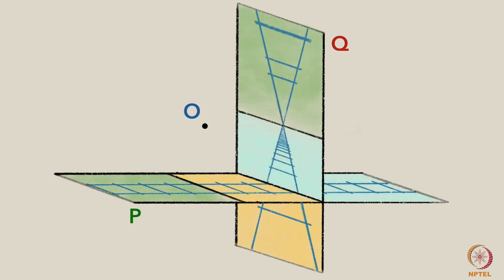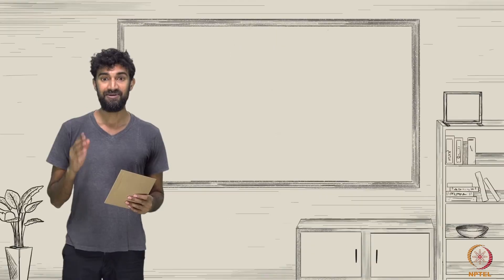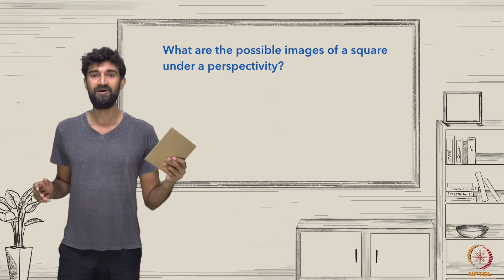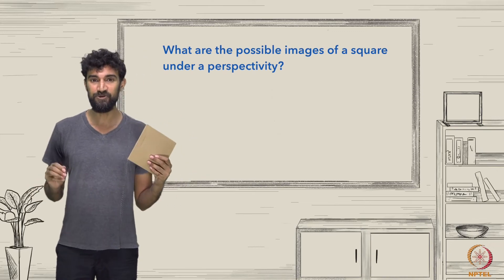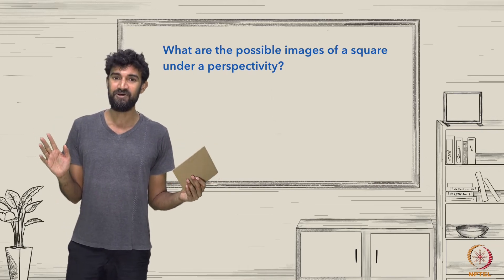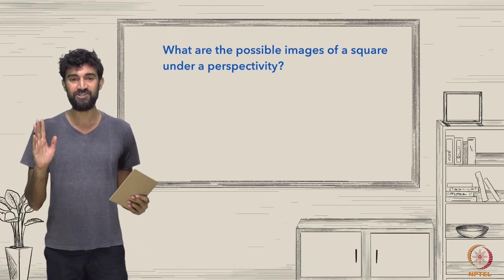However, you might have noticed that this perspectivity is not actually defined at every point of plane P. For example, the point X will not project to any point on the plane Q if the line XO is parallel to Q. We'll soon find a way to fix this issue, but in the meantime, here's a puzzle: what are the possible images of a single square under a perspectivity? Can you produce any quadrilateral, or are there some that you can't produce? And can you get shapes that are not quadrilaterals?